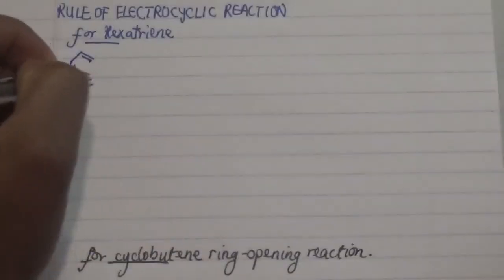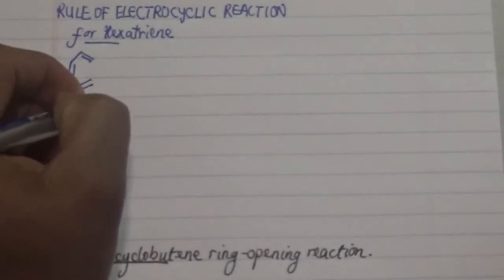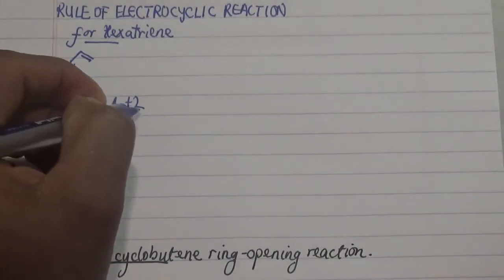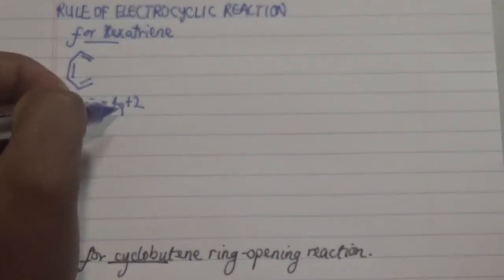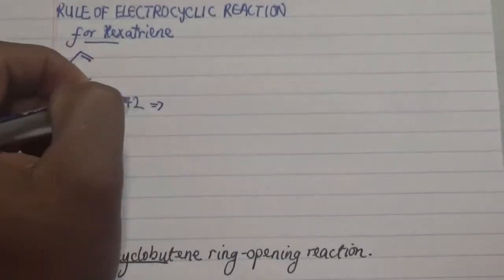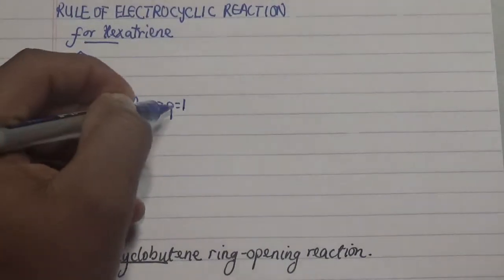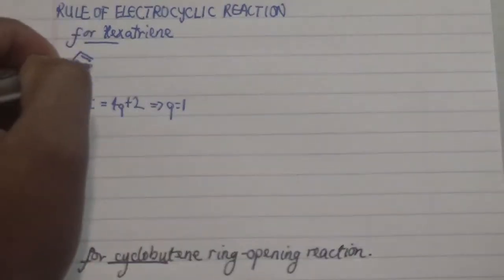Let's start with hexatriene. We know hexatriene has six pi electrons, and six pi electrons obey the 4Q+2 rule — introduced by Woodward-Hoffmann. For six electrons, Q equals one. Q must be an odd number, and with Q equal to one, this tells us about the formation of our sigma bond.